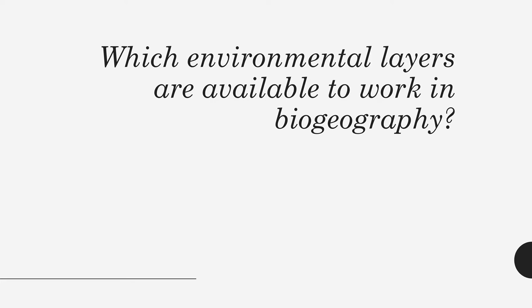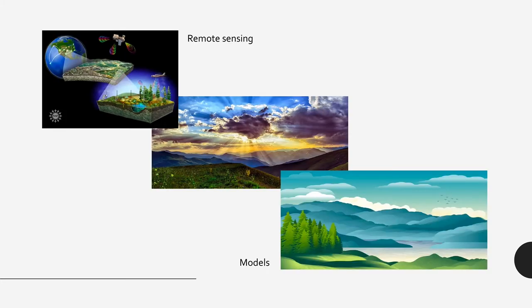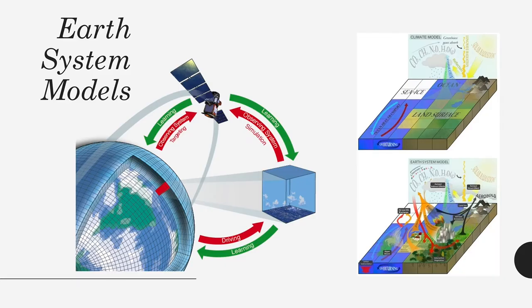It is very important for you to understand which layers are now available to work in biogeography. For a given landscape, we are going to have layers from remote sensing, layers from models, and even models made with remote sensing data — so we have different kinds of layers under a very broad definition.